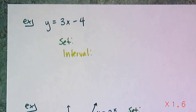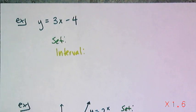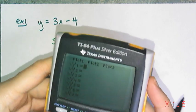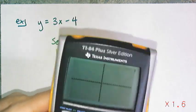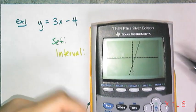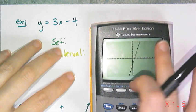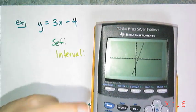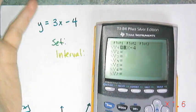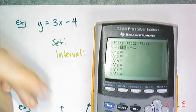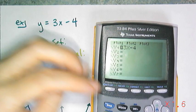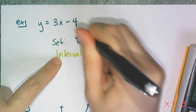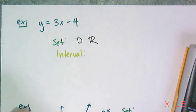Sometimes you're going to be asked to find domain and range for equations. If I ask you to find domain and range for an equation, get out your graphing calculator and graph it, because the easiest way to figure out domain and range is to look at the graph. I graphed this equation and it's a line. For the domain — the x values — I need to think: is there an x value I can't use? Well, I can multiply any number by 3 and then subtract 4 from it, so my domain is going to be the set of all real numbers.